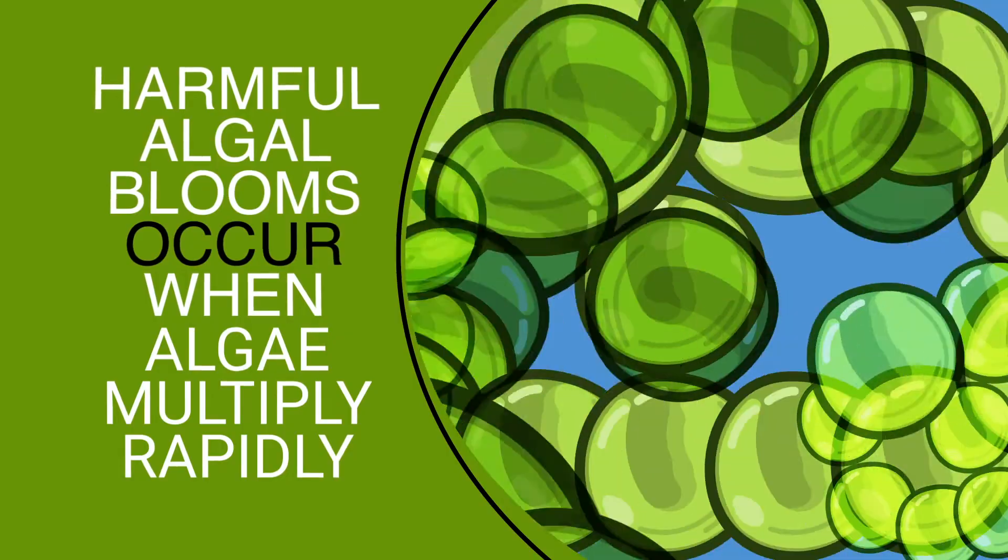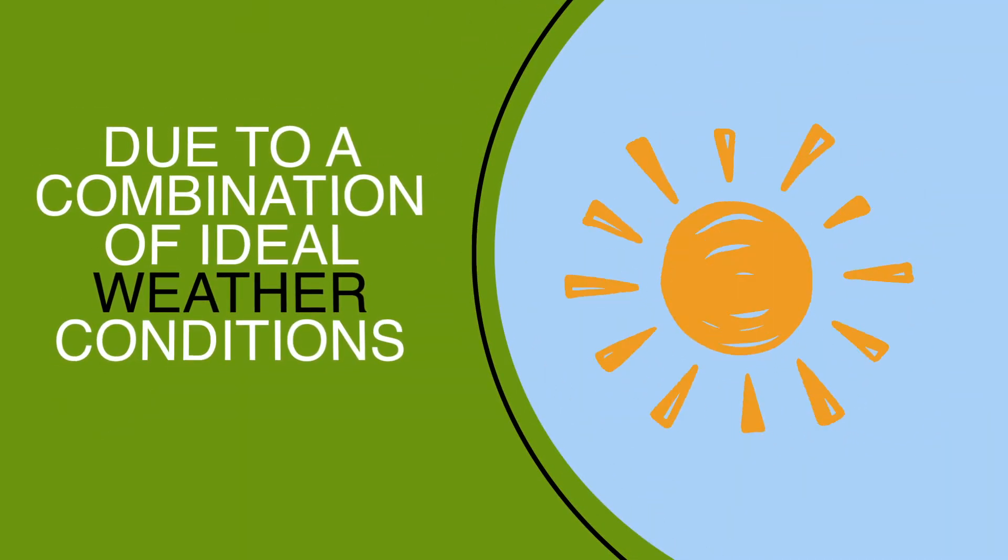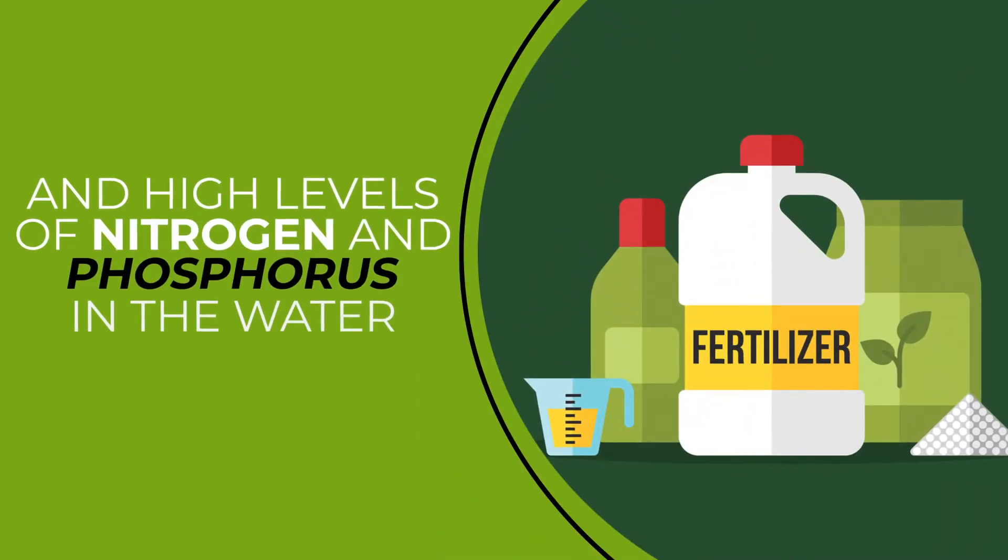Harmful algal blooms occur when algae multiply rapidly due to a combination of ideal weather conditions and high levels of nitrogen and phosphorus in the water.